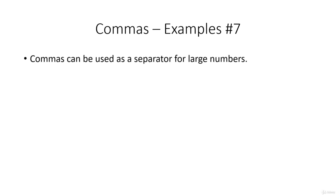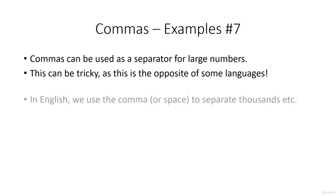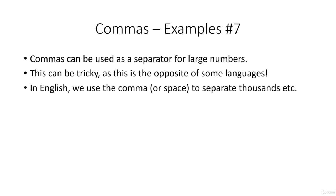And commas can be used as a separator for large numbers. This can be tricky, as in some languages, a comma is used as a decimal point, and the decimal point is used as a thousand separator. So please be careful if you are a native speaker of one of those languages. Now in English, we use the comma or a space to separate the thousands. So as in, one thousand, two hundred and thirty-four. Or six million, three hundred and seventy-eight thousand, one hundred and thirty-four.